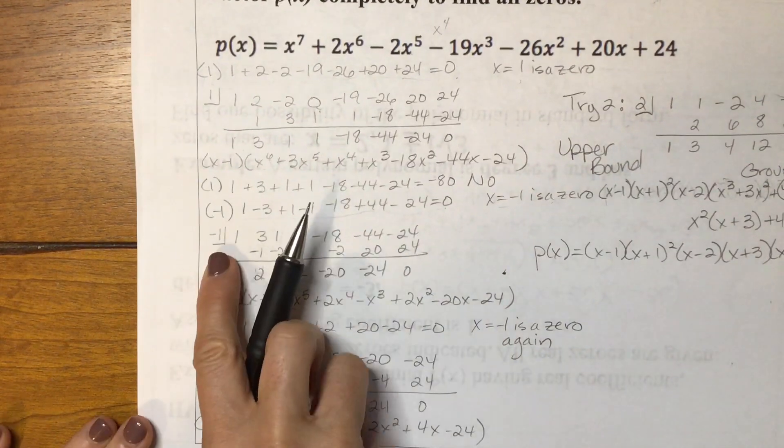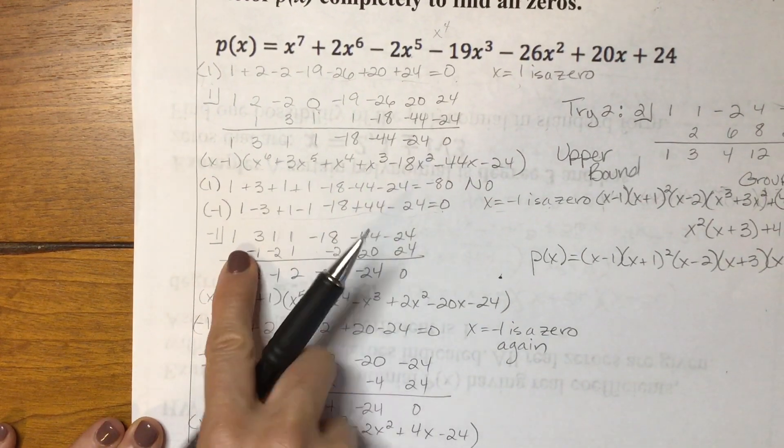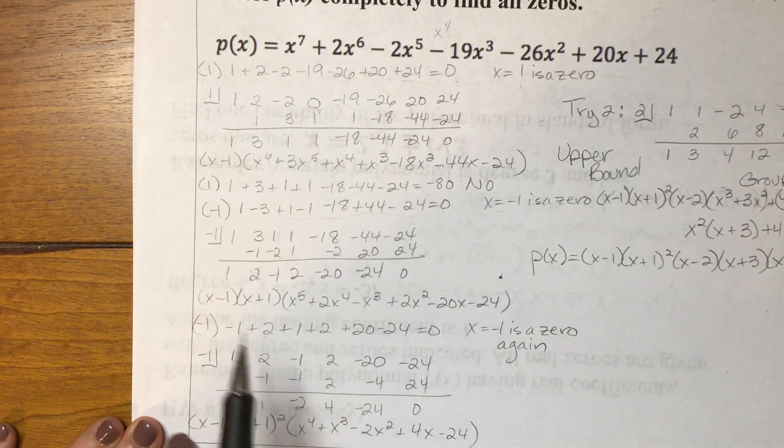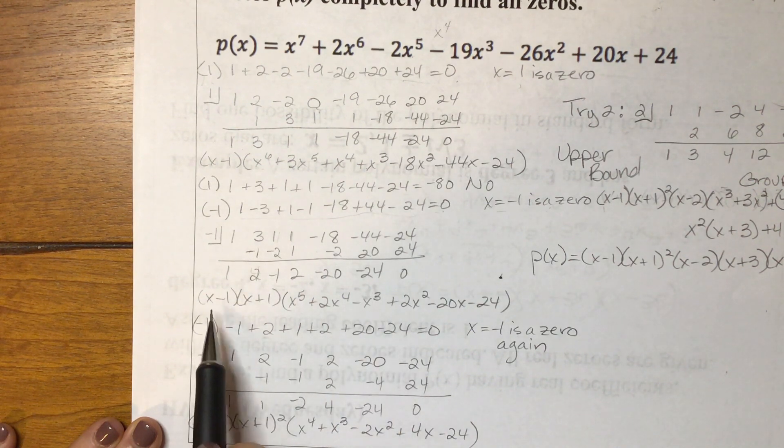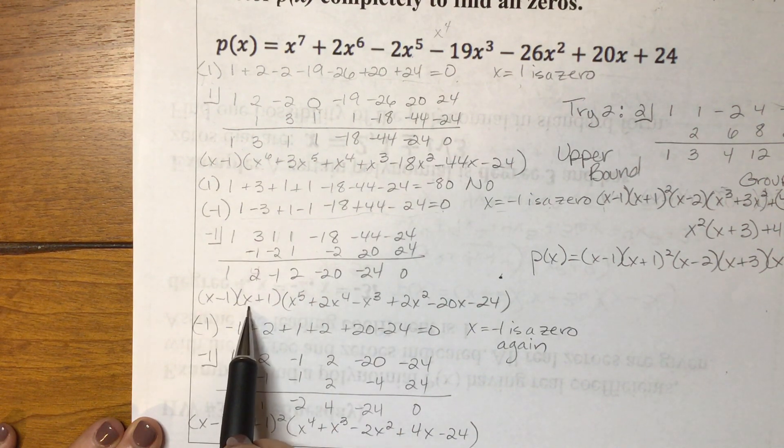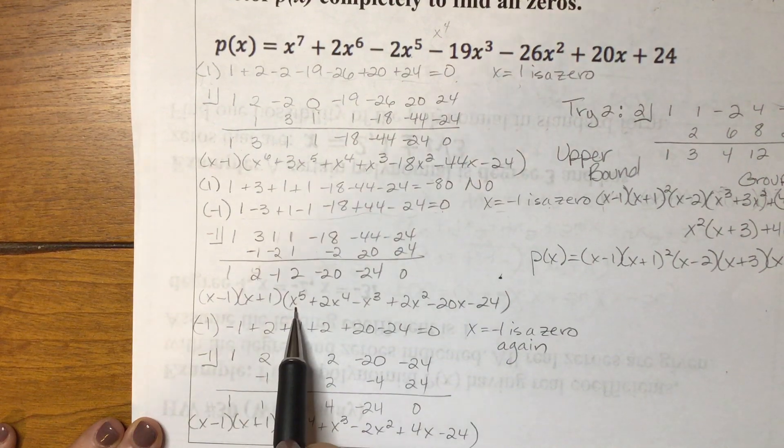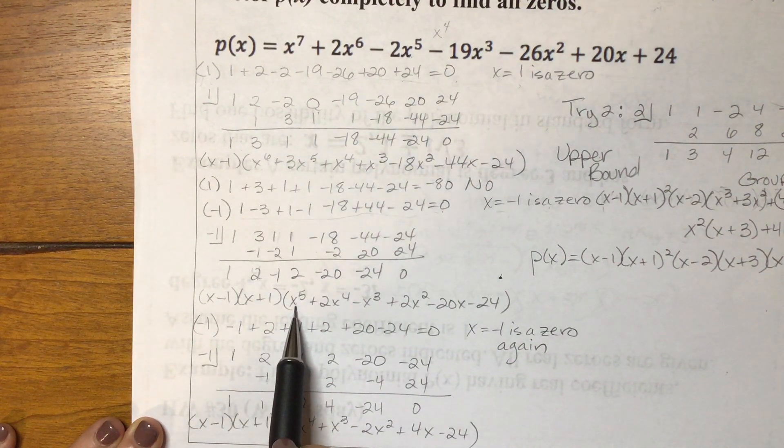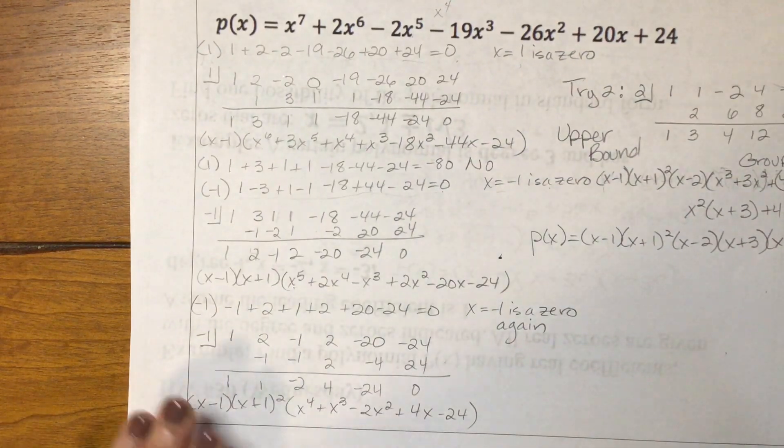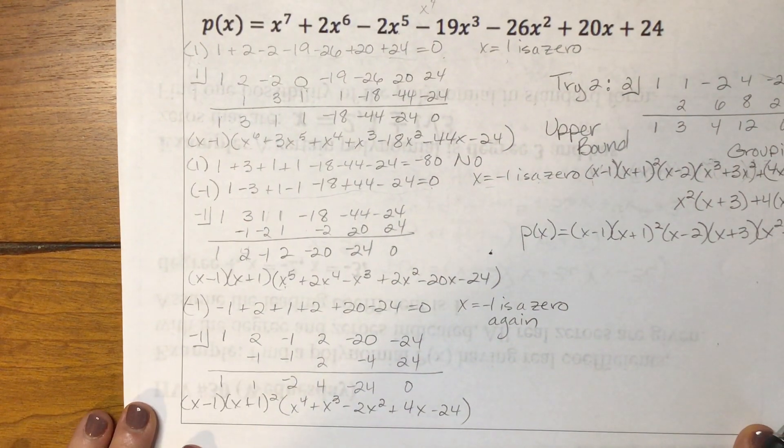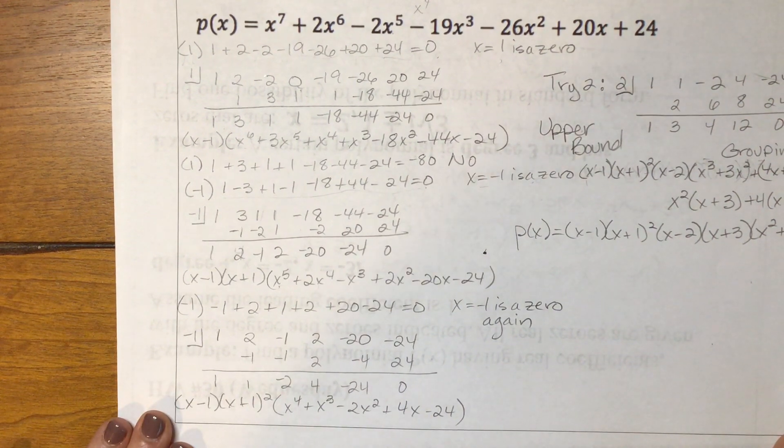And so now I did synthetic division on that x to the 6th. And when I went through that, I got this result. I have x minus 1 as a factor, and now I know I have x plus 1. And what was the result of my synthetic division was x to the 5th plus 2x to the 4th minus x cubed plus 2x squared minus 20x minus 24.